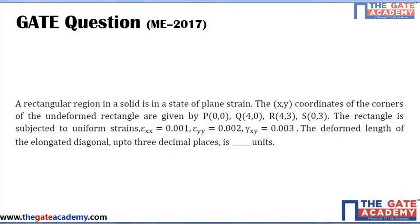We'll discuss the solution for that particular question. Let's read the question — you can see the slide on the screen. It's given that a rectangular region in a solid is in a state of plane strain. The x-y coordinates of the corners of the undeformed rectangle are: P(0,0), Q(4,0), R(4,3), and S(0,3). The rectangle is subjected to uniform strains: epsilon_xx = 0.001, epsilon_yy = 0.002, gamma_xy = 0.003. The deformed length of the elongated diagonal, up to three decimal places, in respective units is to be found.